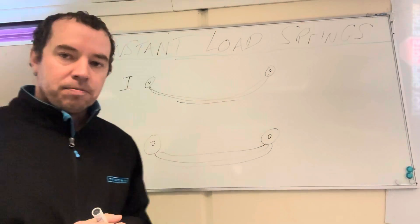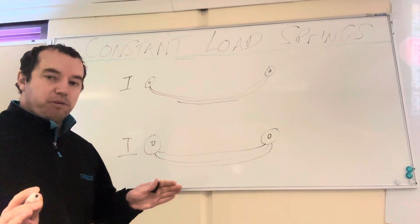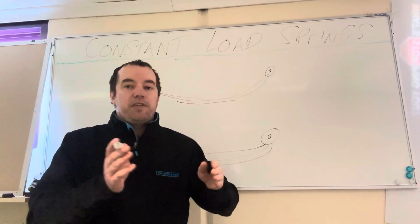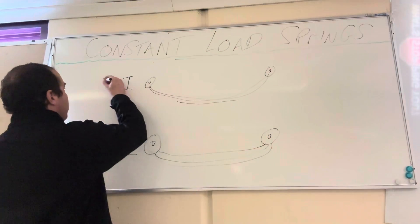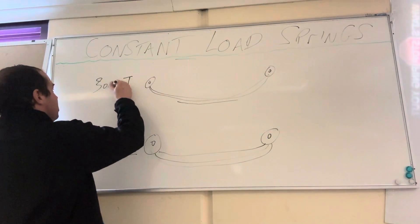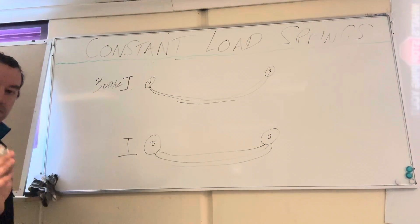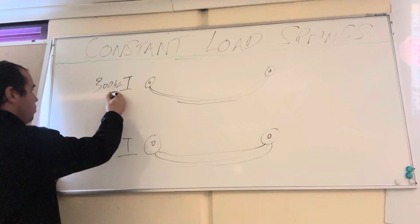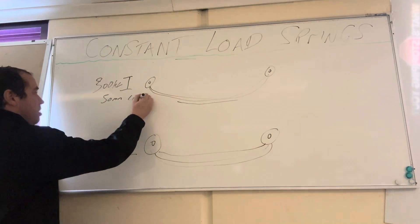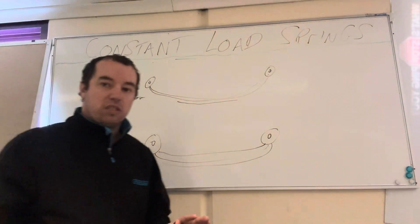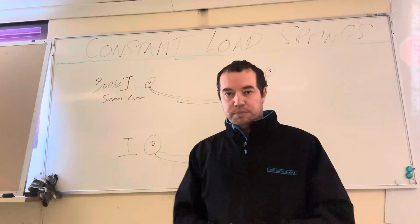Now when they're listed, say a 300 kilo leaf spring, 50 mil lifted. So that means with 300 kilos on the back of the vehicle, you'll have 50 millimetres of lift. That's what it means by constant load. So with a 300 kilo constant load in the back, you'll have 50 mil lift.